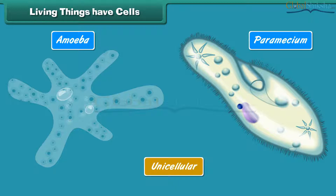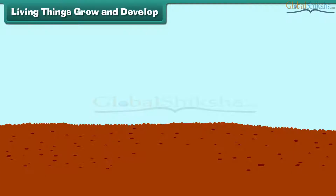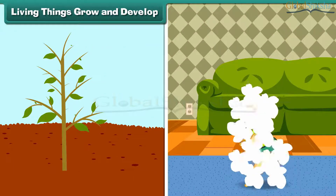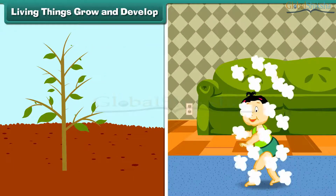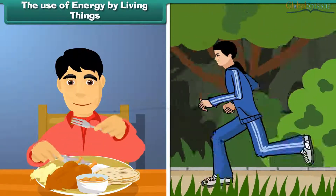Organisms made up of many cells are called multicellular. Living things grow and develop. All organisms grow and develop. Growth results in an increase in size, weight, and synthesis of new protoplasm. In animals, growth is limited to a certain age, while plants grow all their life.